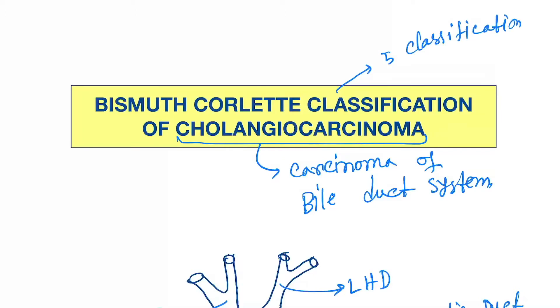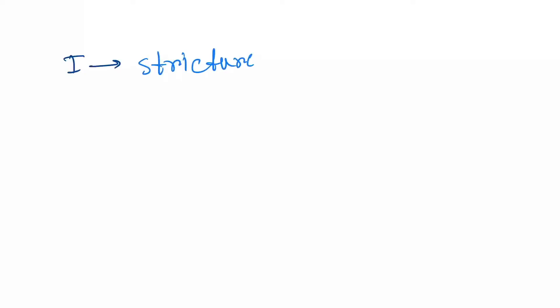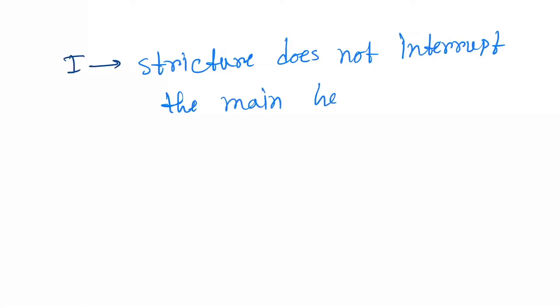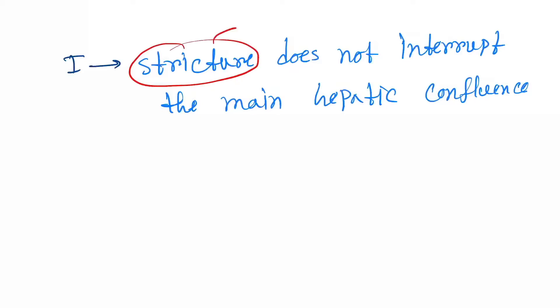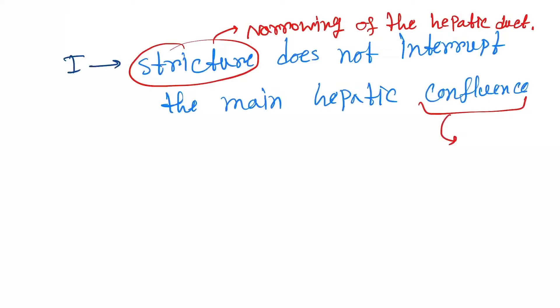Let's understand them one by one. The first one involves a stricture that does not interrupt the main hepatic confluence. Stricture means the narrowing of the hepatic duct, and confluence means the junction of the right and left hepatic ducts.